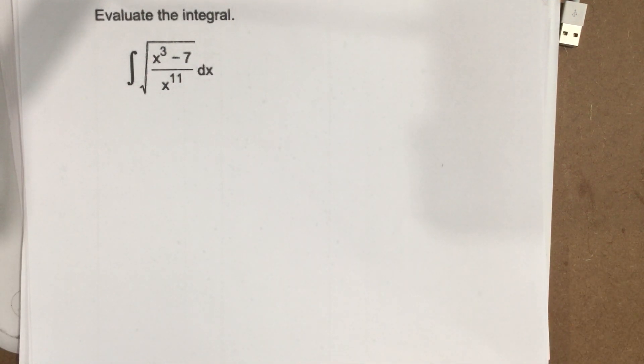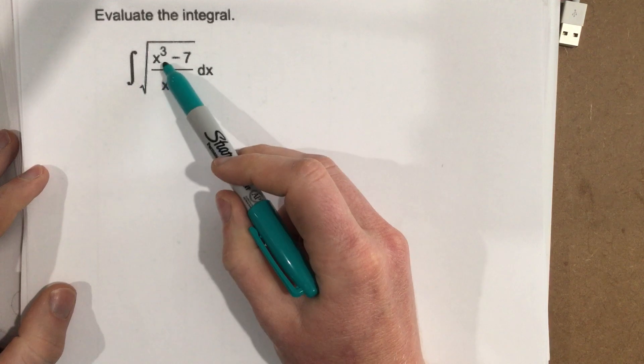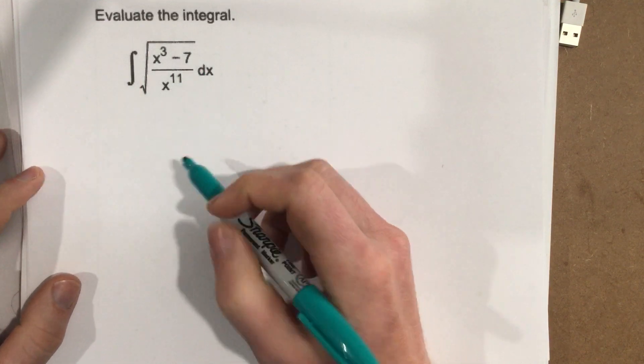This is problem number 3 from section 5.5. In this problem, they want you to evaluate the integral root x cubed minus 7 over x to the 11th dx.